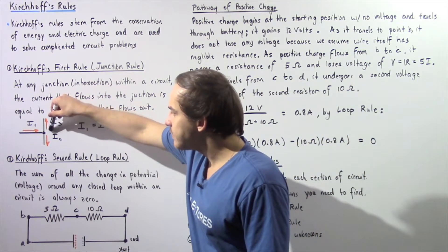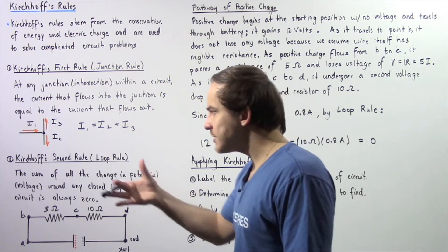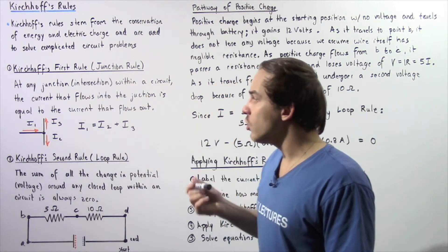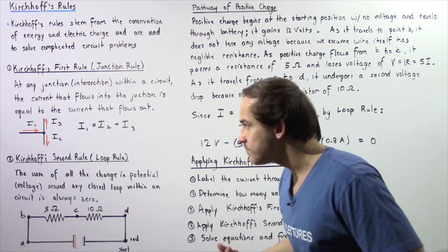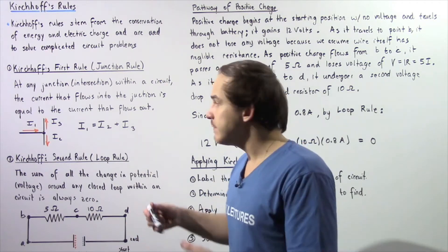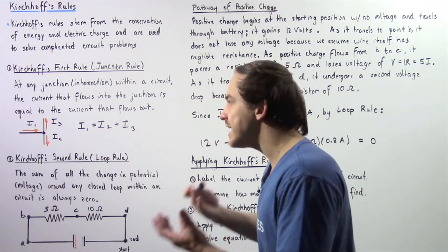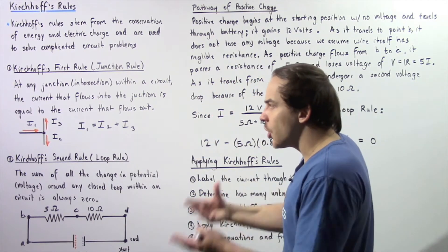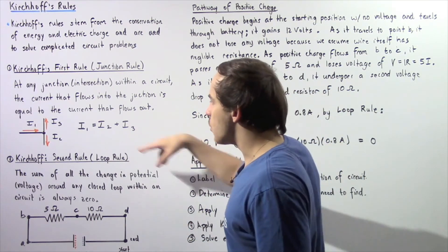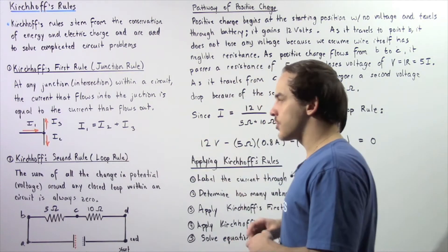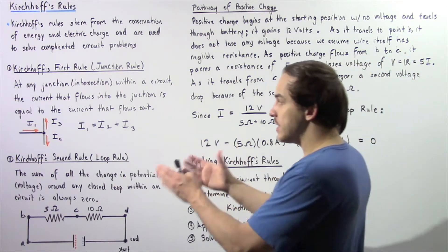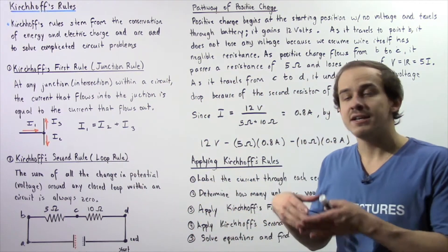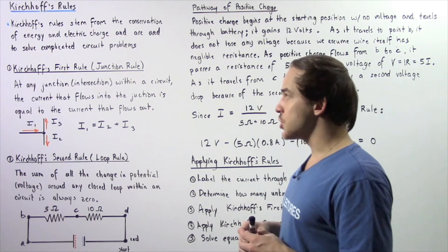Let's suppose we have the following junction or intersection within our electric circuit. By Kirchhoff's first rule, also known as the junction rule, the quantity of electric current I1 that flows into that junction is equal to the sum of the electric current that flows out: I2 plus I3. This junction rule is essentially a byproduct of the conservation of electric charge.